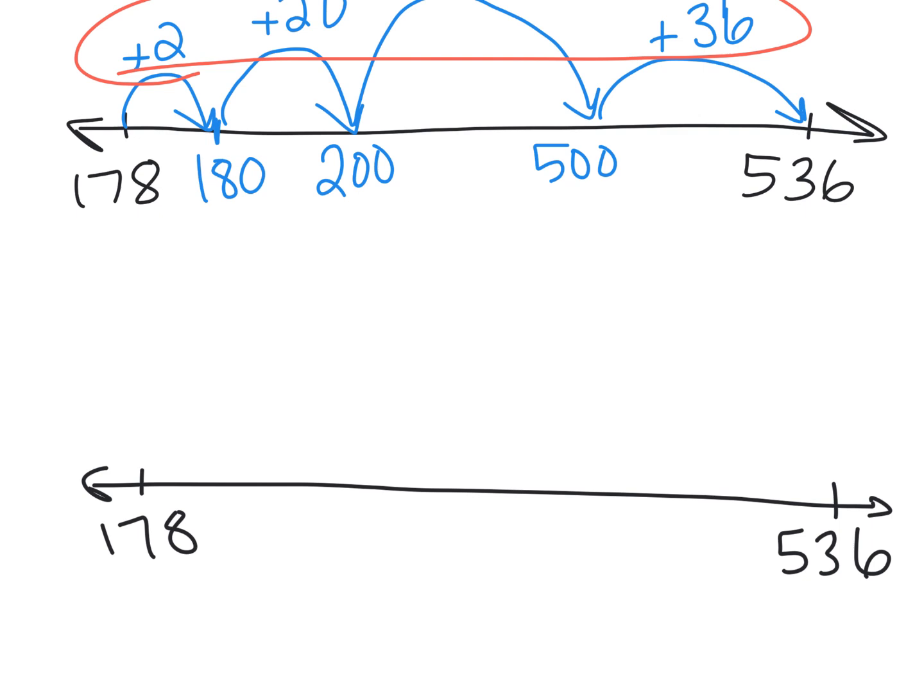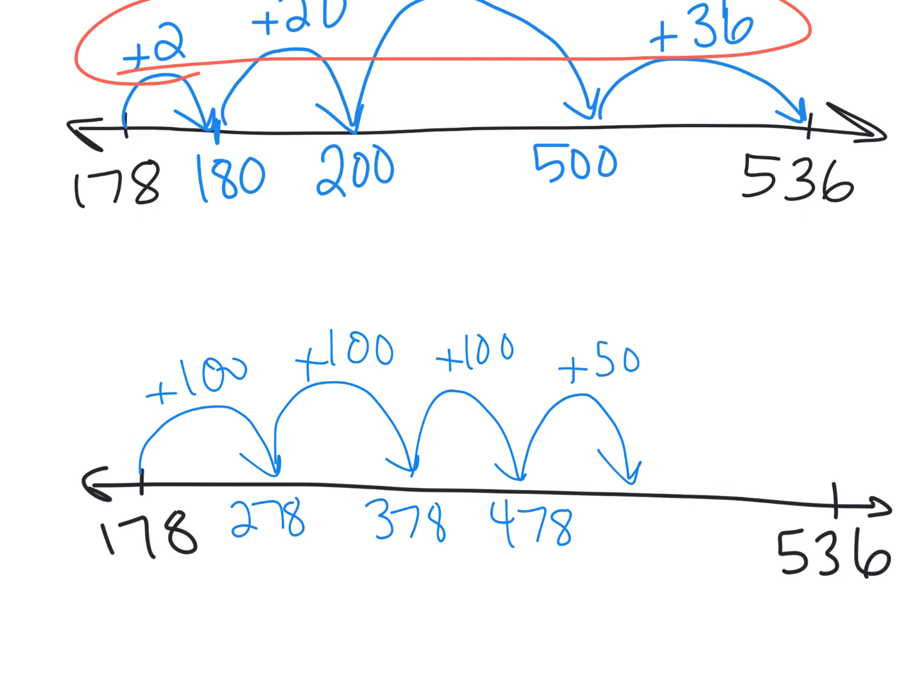So, another way a student could show the answer is a student could say, well, I'm going to go 100. That's going to put me at 278. I'm going to do another 100. That's going to put me at 378. I'm going to do another 100. That's going to put me at 478. Well, I can't do any more 100s because that would put me past 536. But I think I can do, let's do 50.